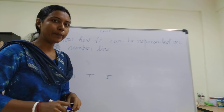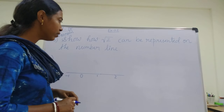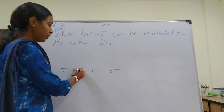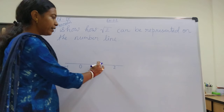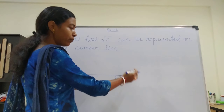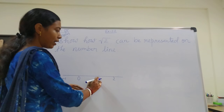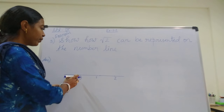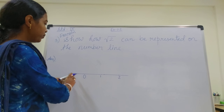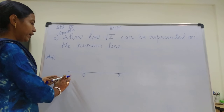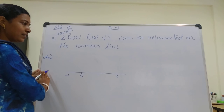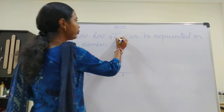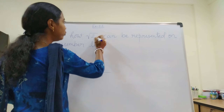You know in the number line, integers are there. Between 0, on the right side of 0 are positive numbers: 1, 2, 3, and on the left side of 0 are negative numbers: minus 1, minus 2, minus 3. But how will we show root 2?